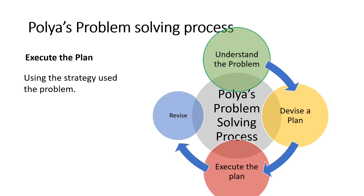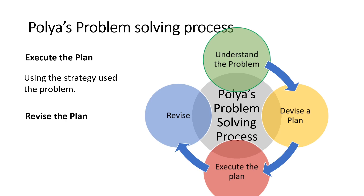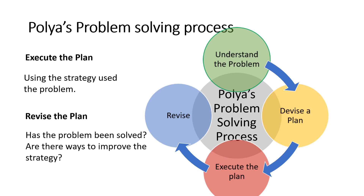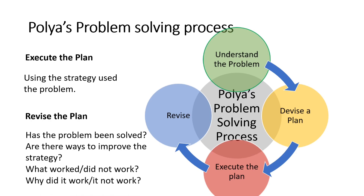Finally, you should reflect on the entire process to determine whether there may be elements in the process that can be modified to bring about improvement. In your reflection, ask yourself these questions. Remember, the best laid plans of men and mice oft go awry. So if your chosen strategy did not bring about the desired results, then you start over the process.